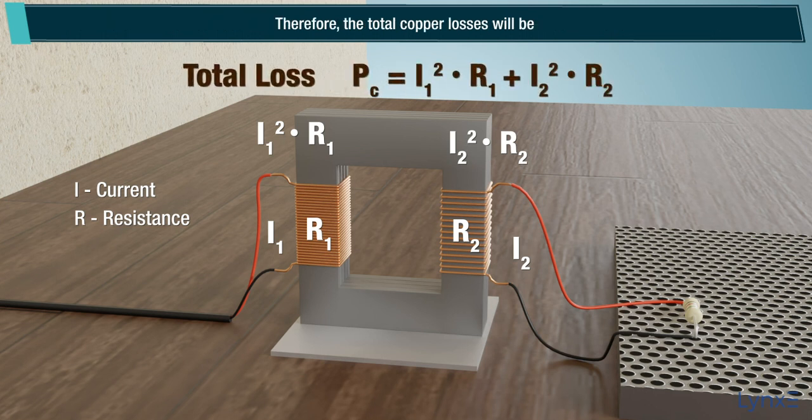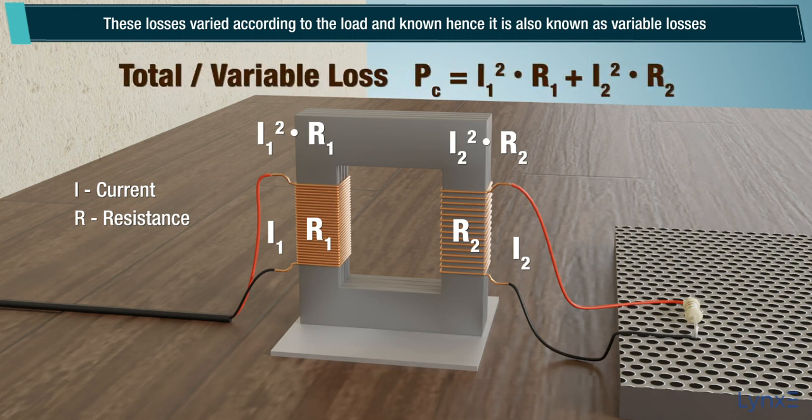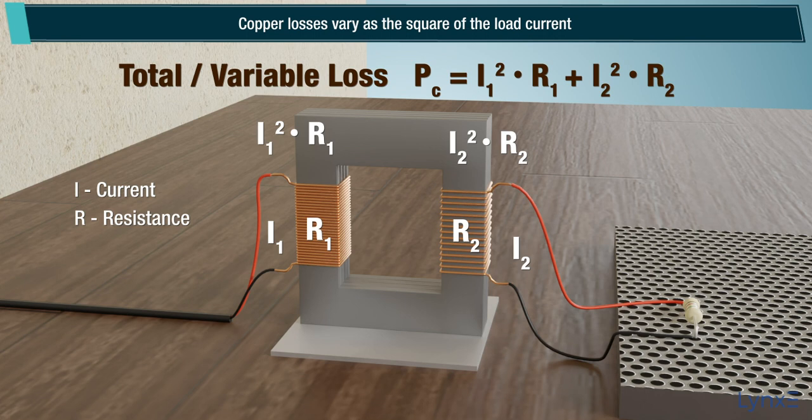Therefore, the total copper losses will be the sum of both. These losses varied according to the load and hence it is also known as variable losses. Copper losses vary as the square of the load current.